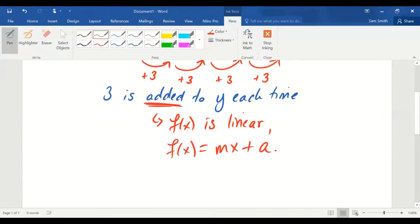Now, since a consistent amount is being added to y each time, the function is linear. And the quantity that is being added each time is the slope. The slope, the m value, is 3, the amount that's being added each time.